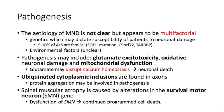When it comes to pathogenesis, the etiology of motor neuron disease is not clear but appears to be multifactorial. There are possibly genetic risk factors which may dictate how susceptible patients are to neuronal damage. Five to ten percent of ALS is familial and can be related to the SOD1 mutation, the C9ORF72 gene, or the TARDBP mutation.